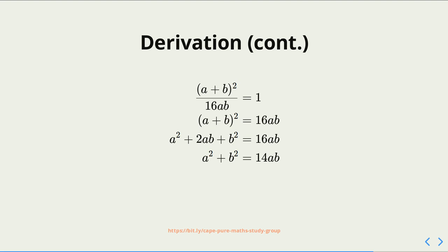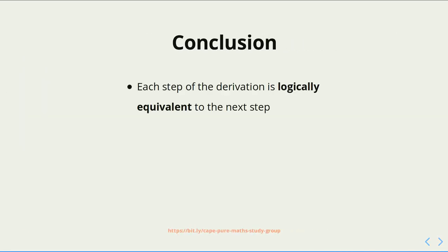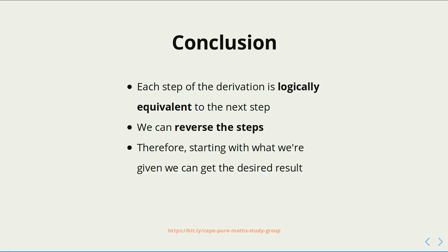But this is the result that we were given. So we were able to show, through a series of deductions, that the result we want to prove can derive what we were given. Now, since each step of the derivation is logically equivalent to the next step, it follows that we can simply reverse the steps. Therefore, starting with what we're given, we'd be able to get to the desired result. This completes the proof.